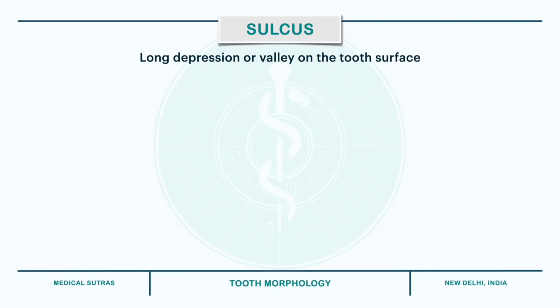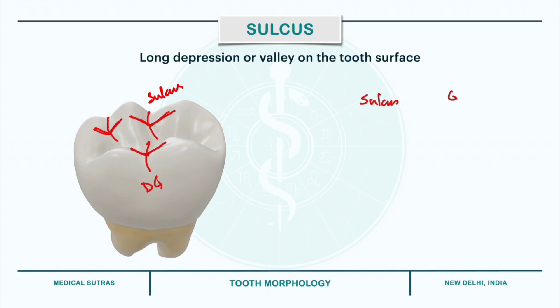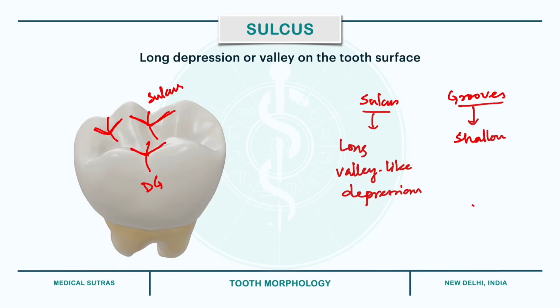Now coming to sulcus: a sulcus is a long depression or valley on the surface of a tooth that is formed by the inclines of ridges and cusps. For example, if you look at the lower first molar, these long depressions along the cuspal inclines are referred to as sulcus. These inclines meet at an angle and form a groove known as the developmental groove. One should not get confused between sulcus and grooves: sulcus are long valley-like depressions, while grooves are shallow linear depressions present at the junction of the inclines of the cusps or ridges.